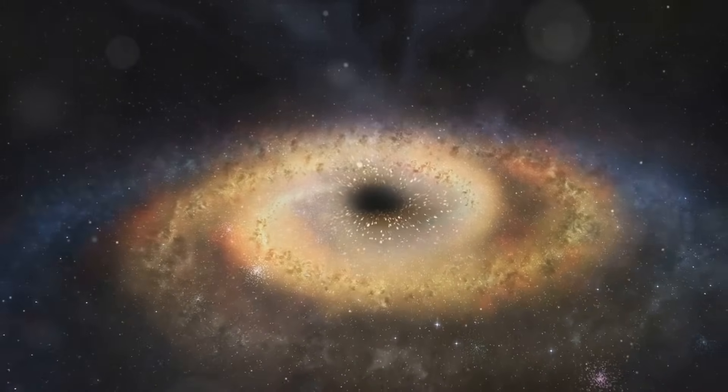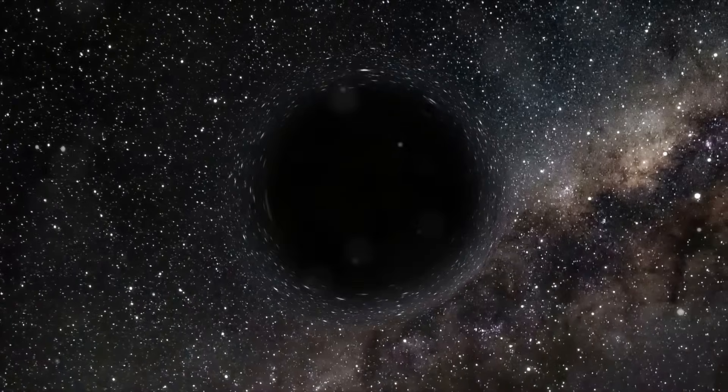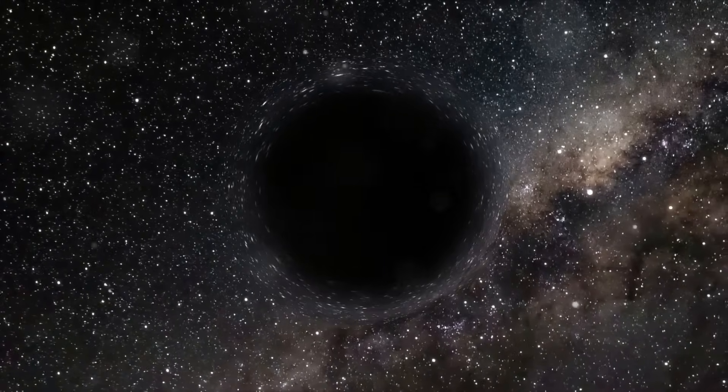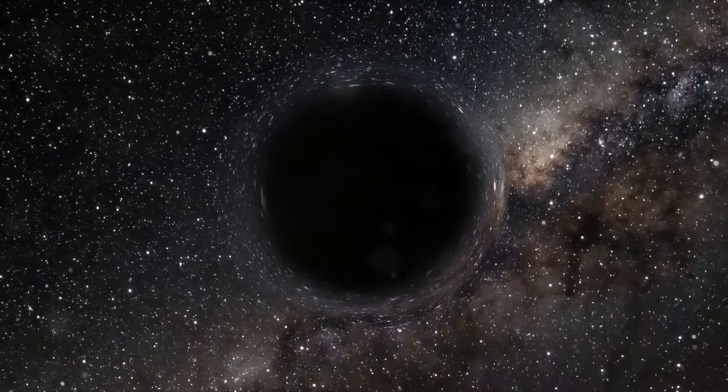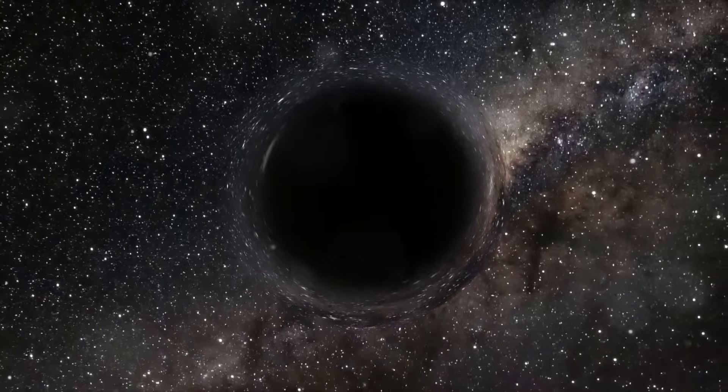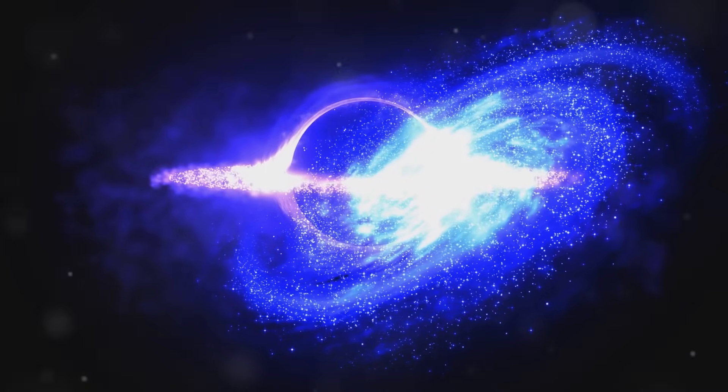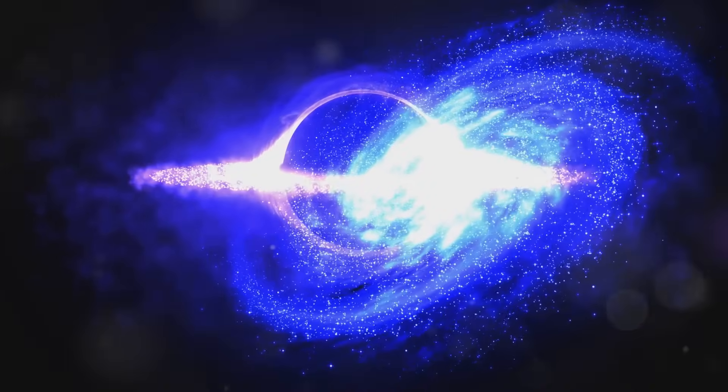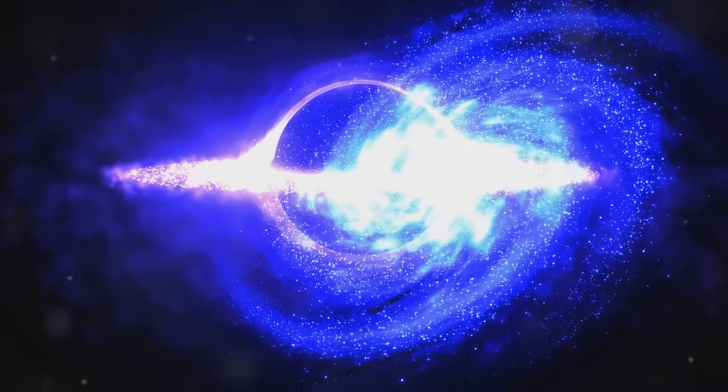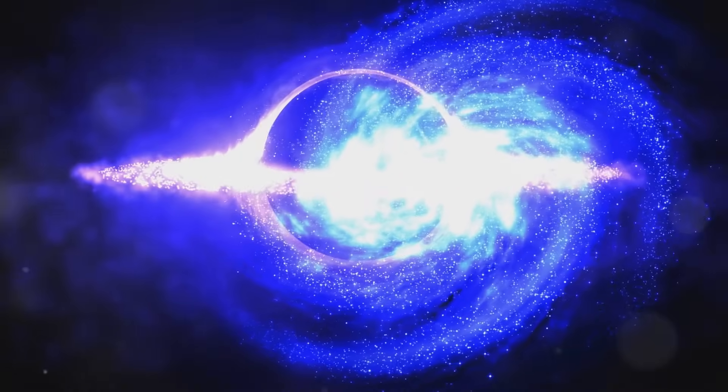At its blazing heart, the Milky Way houses Sagittarius A asterisk, a supermassive black hole weighing about 4 million solar masses. This awe-inspiring gravitational anchor orchestrates the ballet of stars swirling around it within the dense galactic core.